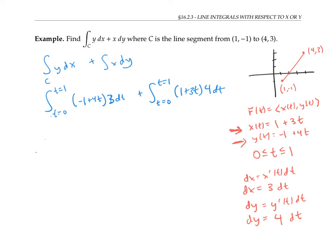From here, we have a pretty routine integration problem. I'll pull out the 3 and integrate to get minus t plus 2t squared. And I'll pull out the 4 and integrate to get t plus 3t squared over 2. Evaluating gives an answer of 13.